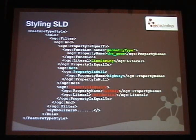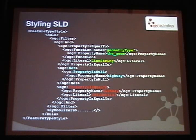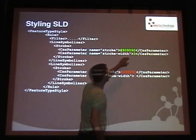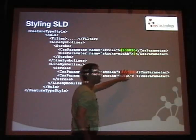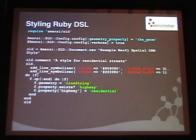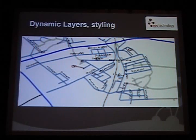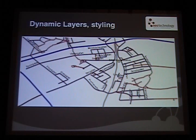For styling, we decided to do much as GeoServer does — you filter on features and attributes and then provide styling information. For instance, a green stroke of width three, and then you put a red stroke over it, which then gets over-stroked by that.